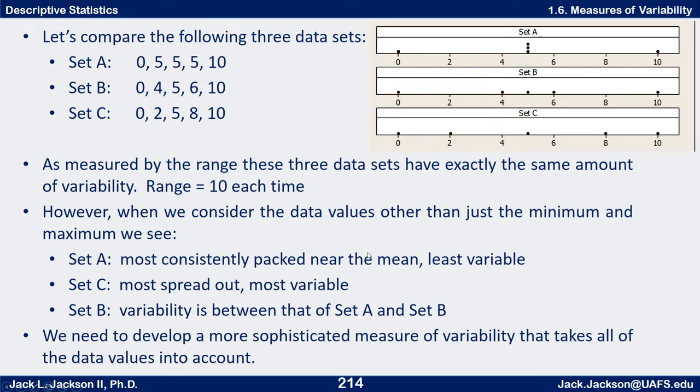As measured by the range, these three data sets have exactly the same amount of variability. However, if we consider all the data values, data set A has the least variability overall because it has several data values packed closely to the mean. Whereas data set C is the most spread out, with data set B somewhere in between.